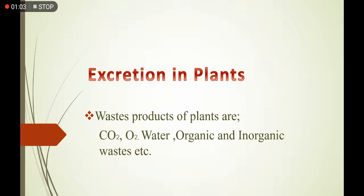Carbon dioxide جو photosynthesis اور respiration میں consume یا produce ہوتی ہے — جب respiration کی رفتار photosynthesis کی رفتار سے بڑھ جائے تو carbon dioxide body میں surplus یعنی اضافی ہو جاتی ہے، اور وہ plant کے لیے waste material consider کیا جاتا ہے۔